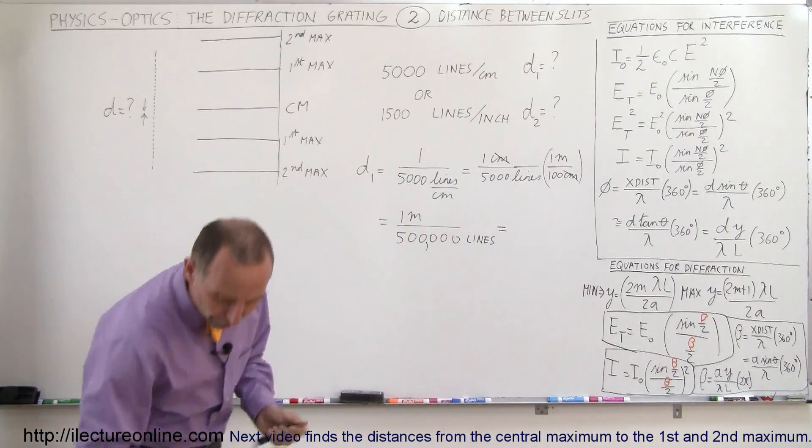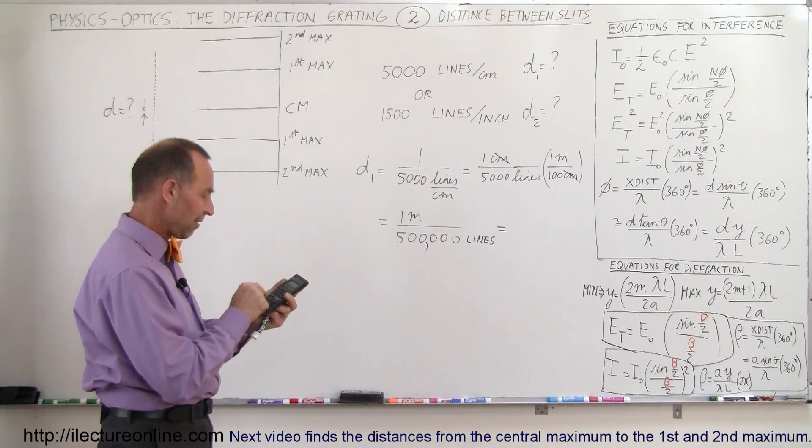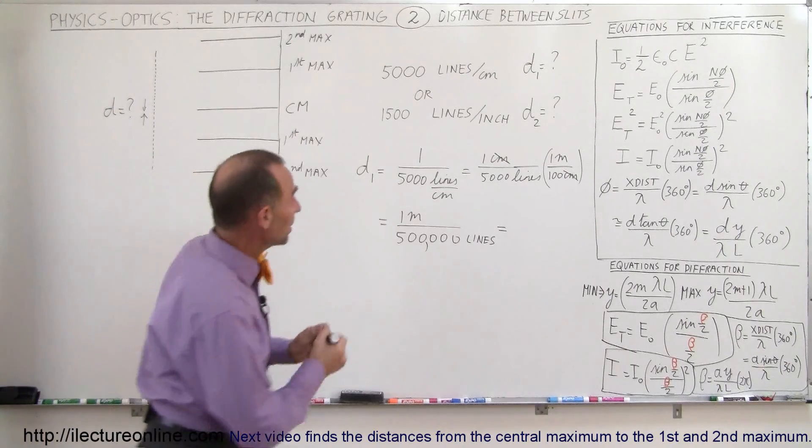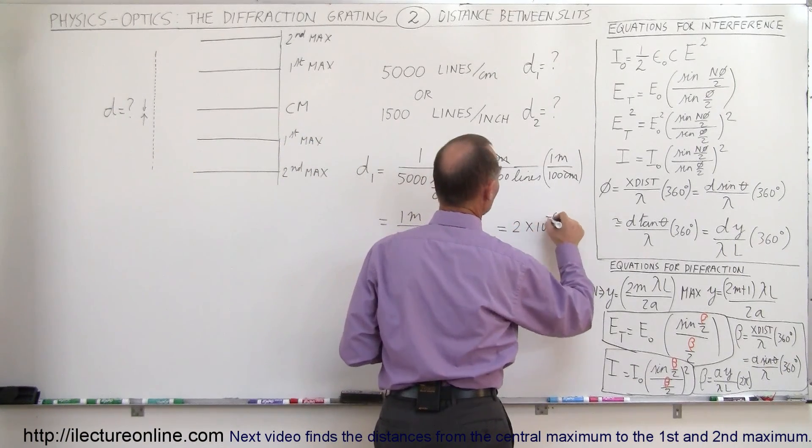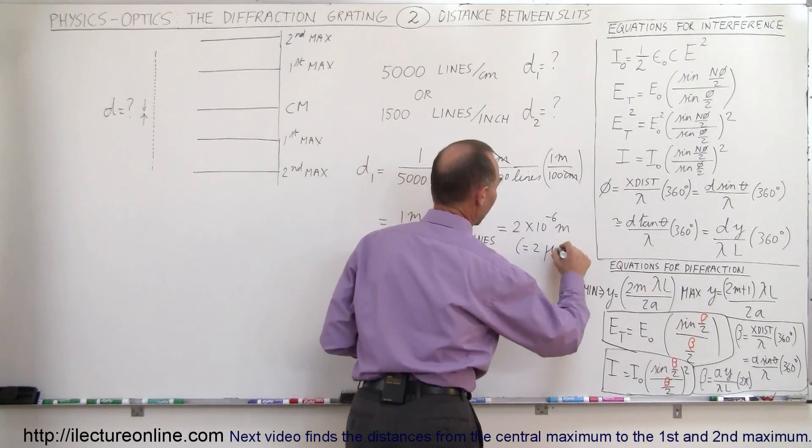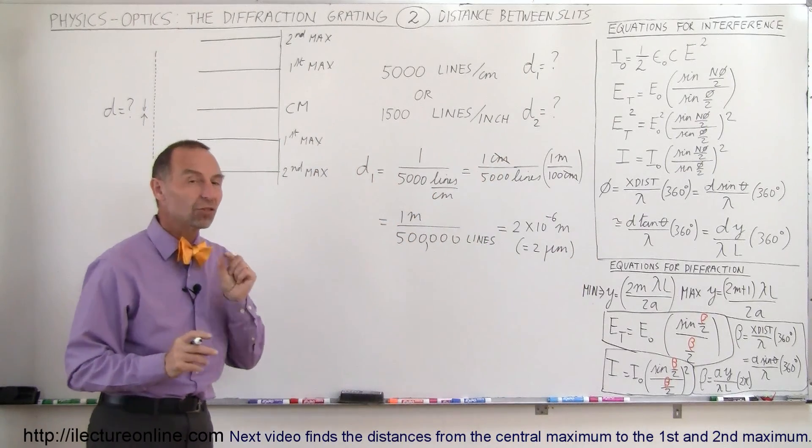And then if we actually put that number into a calculator, we take 1 divided by 500,000, we get 2 micrometers. So this is equal to 2 times 10 to the minus 6 meters or 2 micrometers. So that would be the distance between any two adjacent slits.